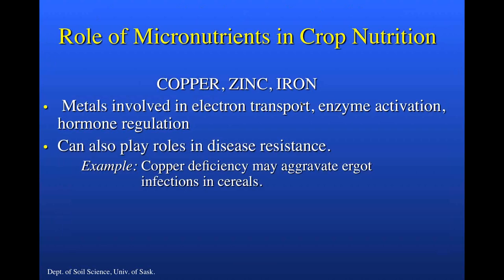Regarding the role of micronutrients in crop nutrition, copper, zinc, and iron are involved in a number of important physiological processes in the plant, including electron transport, activation of many enzymes, and hormone regulation. They can also play indirect roles in plant health — for example, in disease resistance. A good example is that copper deficiency may aggravate ergot infections in cereals because the deficiency causes florets to remain open longer. Copper also has fungicidal properties, which may help explain some responses observed in our recent trials.